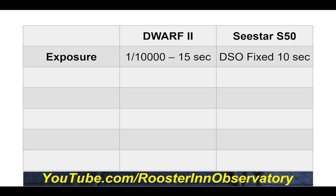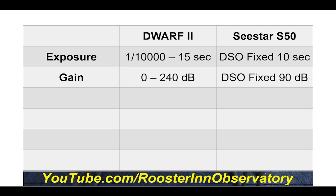On exposure: the Sea Star has a fixed exposure of 10 seconds, while the Dwarf can be programmed from 10 microseconds all the way up to 15 seconds. Same with gain — the Sea Star is fixed at 90 dB, while the Dwarf lets you pick anything between 0 and 240 dB. This proved frustrating when trying to image planets with the Sea Star: they were way overexposed and I couldn't bring the exposure down. Neither telescope is really intended for planetary work, but it would have been nice to see Saturn or Jupiter as something other than a big white blob.